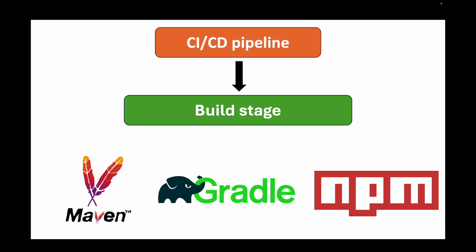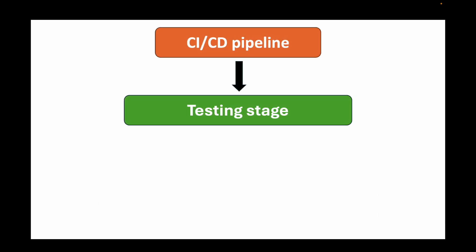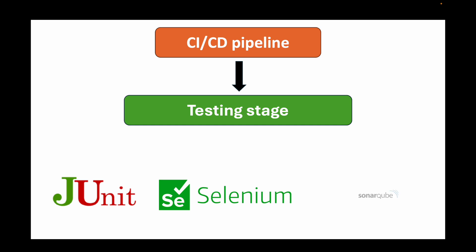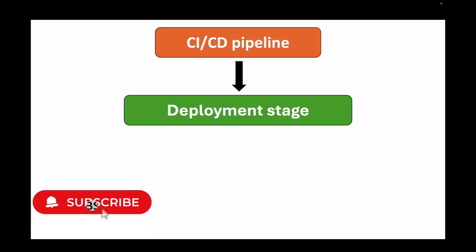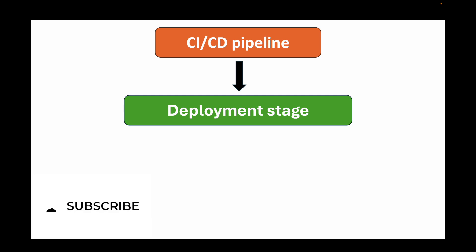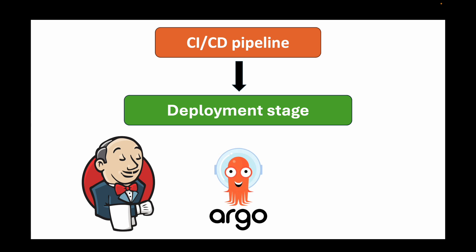The next stage is the testing stage, where you implement automated unit testing, integration testing, and security testing using tools like JUnit, Selenium, and SonarQube. The final stage is the deployment stage, where the application is released to various environments — dev, staging, or production — using tools like Jenkins, Argo CD, or Spinnaker to set up an automated deployment pipeline.